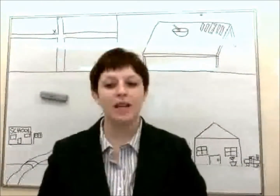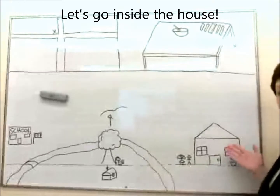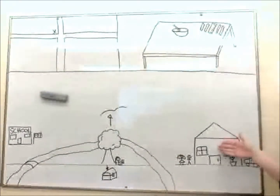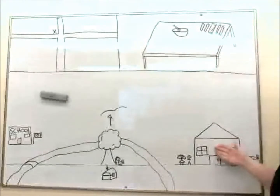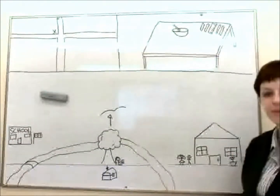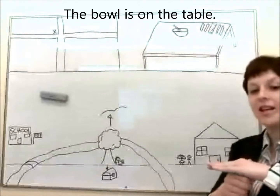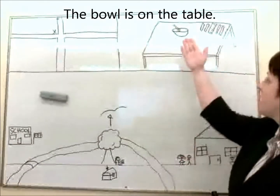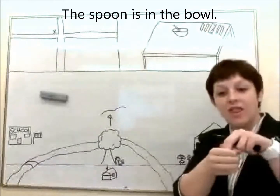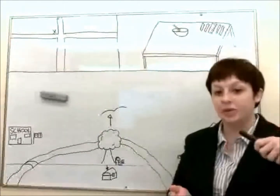We're going to begin by going inside this lovely house. If we go inside our lovely house, we see a table. And on this table, there is a bowl. And in that bowl, there is a spoon.